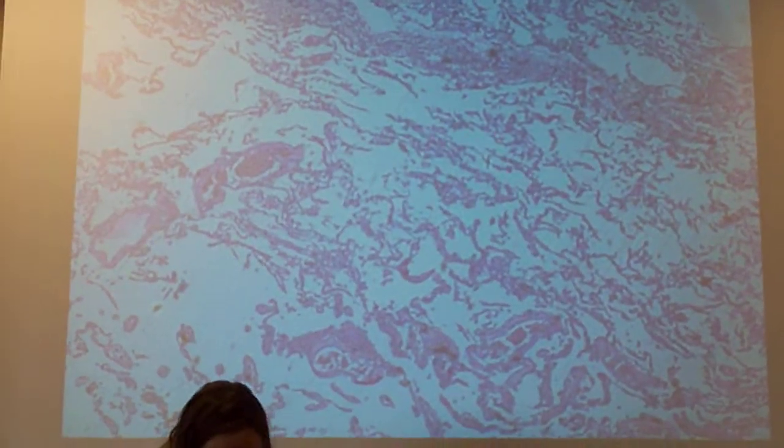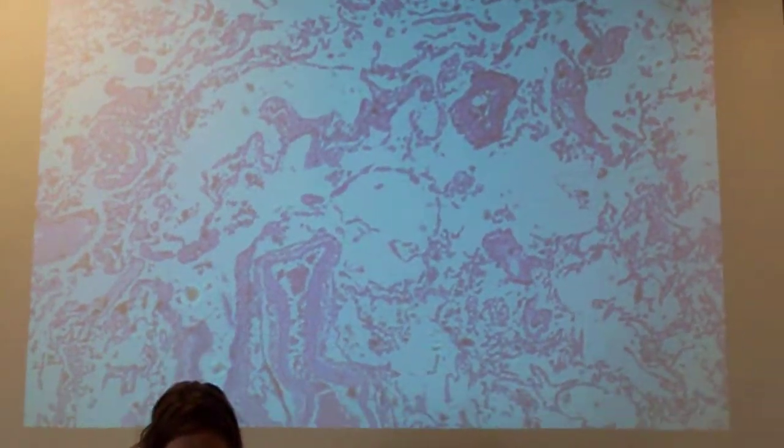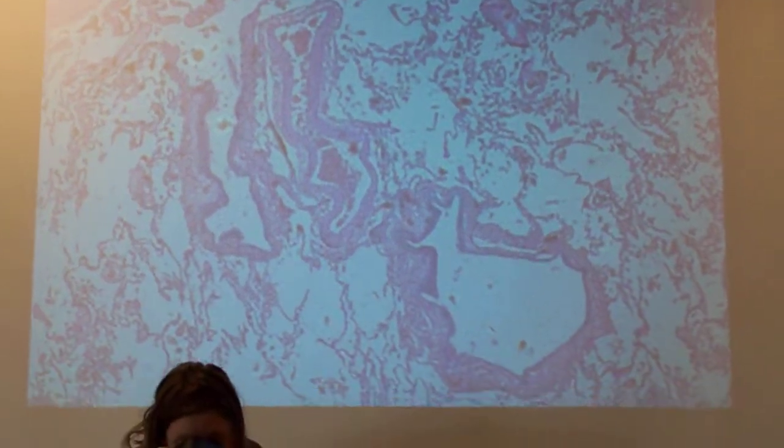What we're looking for when we section out a lung is some of the other tubes bringing air into and out of the lungs, like these guys.